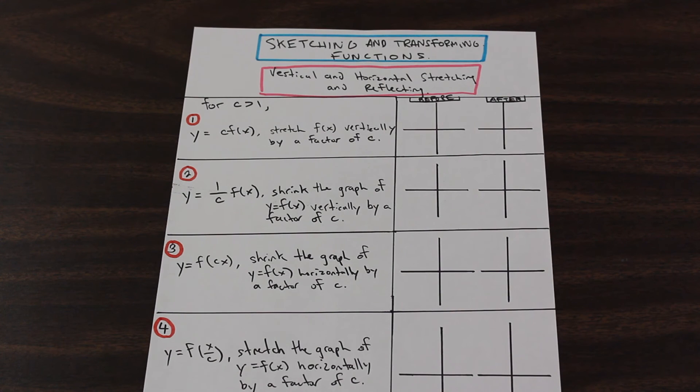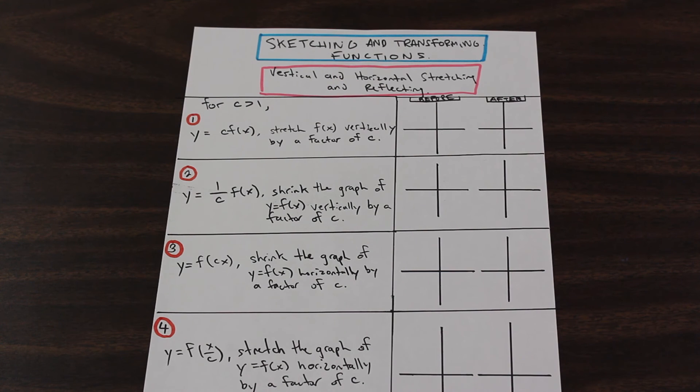Essentially what it is, is we're going to start with some base function. We're going to be given some base function, so something like root x, sine x, and that sine x will have different numbers attached to it, so it'll be like 2 sine x minus 5.